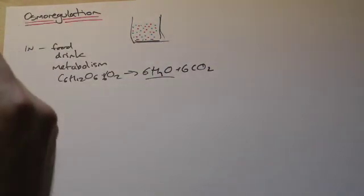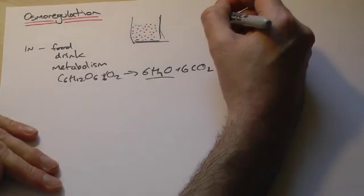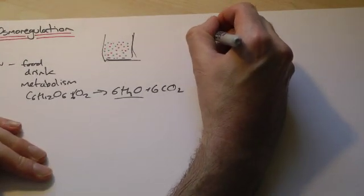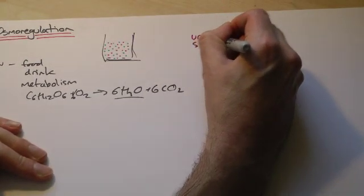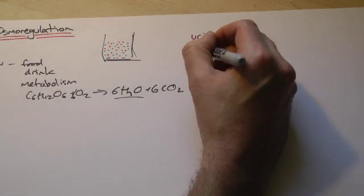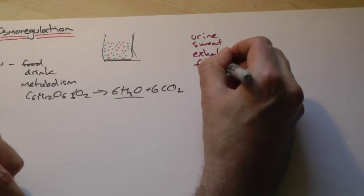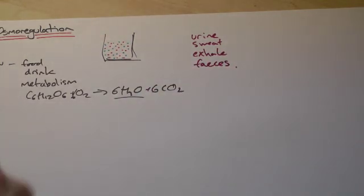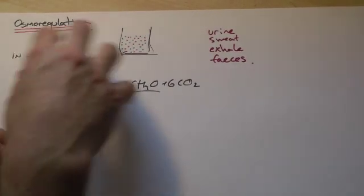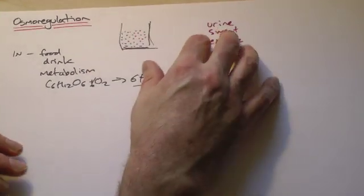We lose water through a variety of places. So we would lose water in our urine, sweating, as we breathe out, exhaling air, and in feces. We're constantly trying to balance these two things in the amount we take in, the amount that goes into our body, and the amount that's lost.